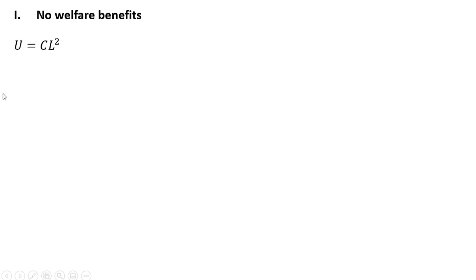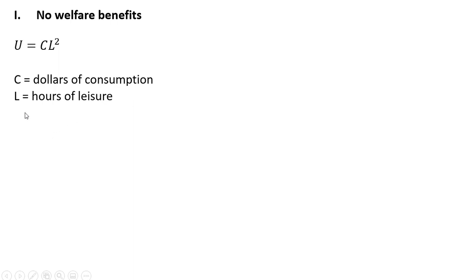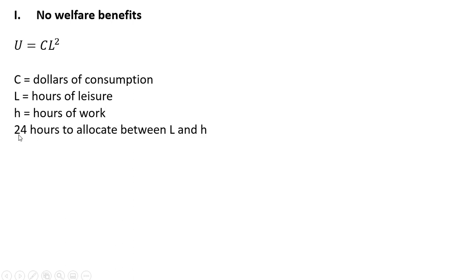Here is the consumer's utility function. It is a function of C, consumption, and L, hours of leisure. So C is consumption measured in dollars, and L is hours of leisure. H will represent hours of work. There are 24 hours to allocate between leisure and hours of work.